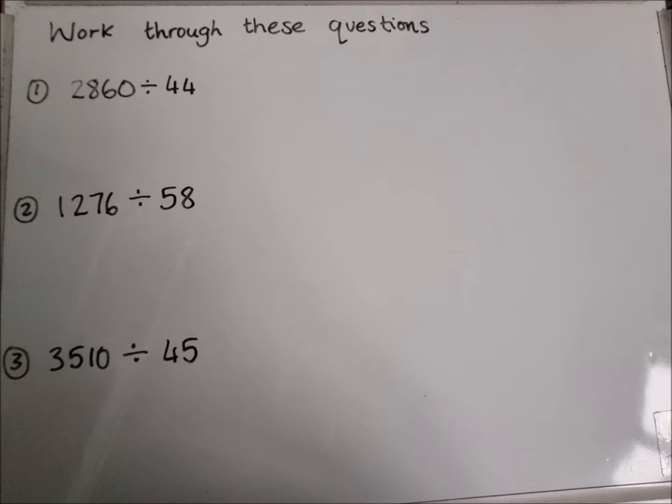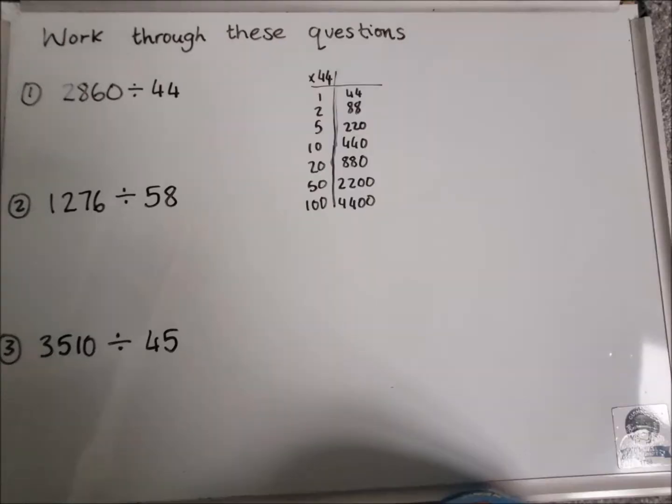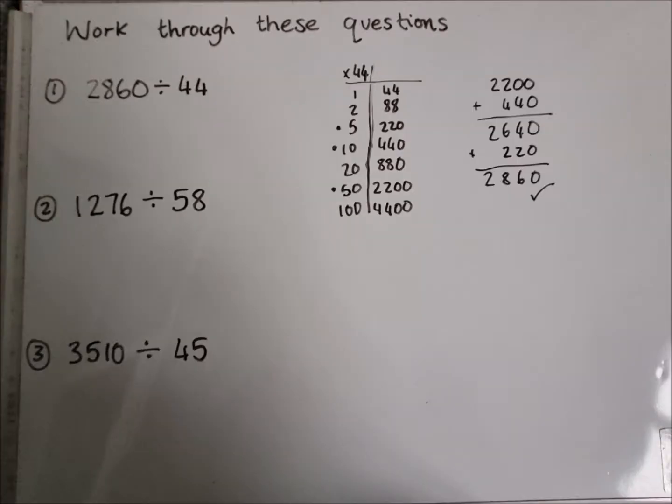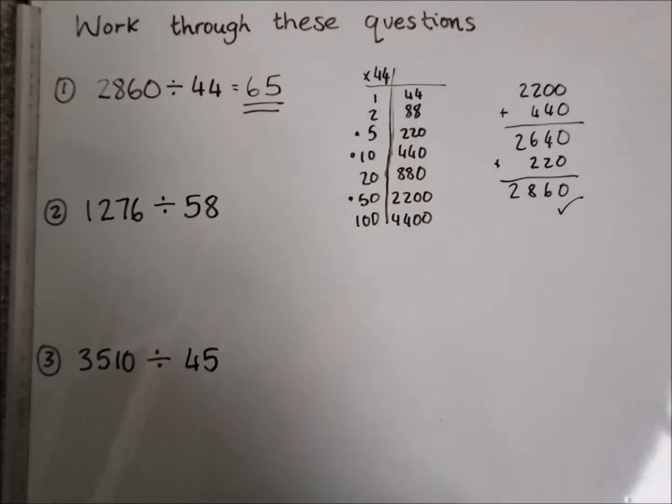Awesome. Let's have a look at the first one to go over together then. So I need to make a coin card for 44 for the first one. So I've got the answer to that coin card there. Then I need to try and make the target number of 2860. So I'm going to add the 2200, 440. I realized I was still a bit short, so I added in another 220, which got me on my target. So add up 50 and 10 and 5 at the side to get my answer of 65 for the first one.